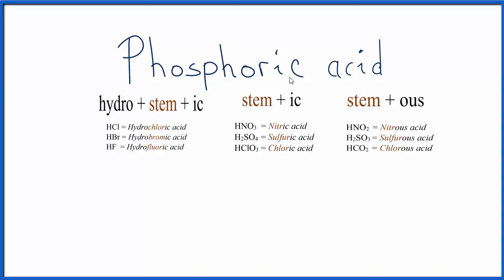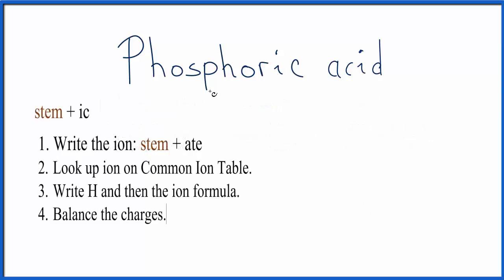Then if we look here, we have -ic here and -ic on this one. This is what we'll use to write the formula for phosphoric acid. First, we'll write the stem, phosphoric acid. So that's this phosphor.